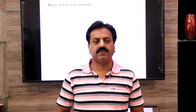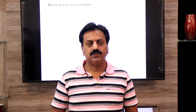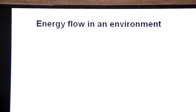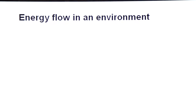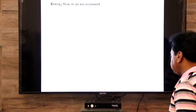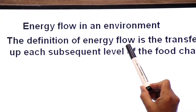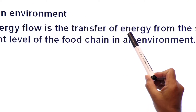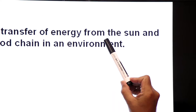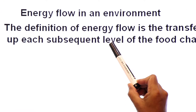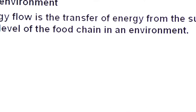Hello dear students, welcome back to our first year biology classes. Today we are going to talk about the energy flow in an environment, the energy flow in a biological system or the energy flow in an ecosystem. The definition of energy flow is the transfer of energy from the sun and up each subsequent level of the food chain in an environment.